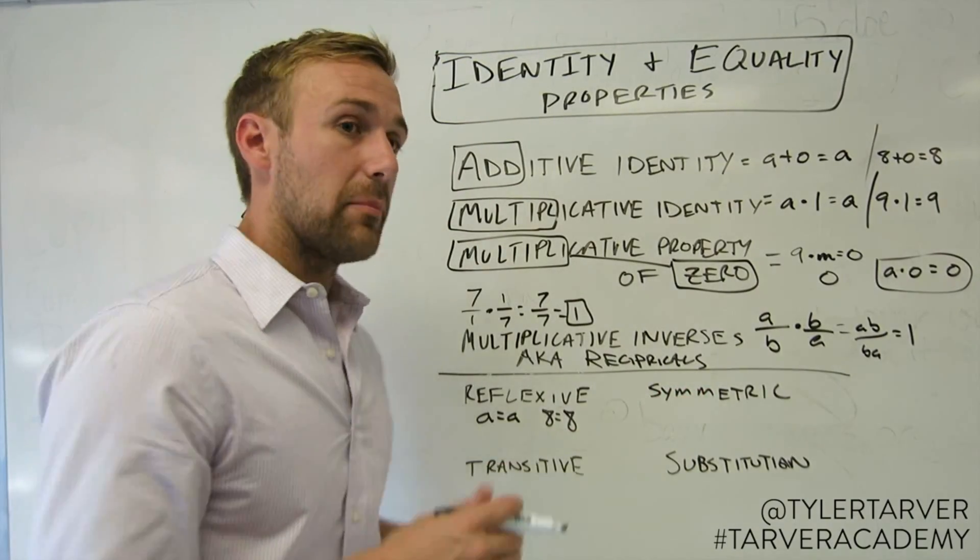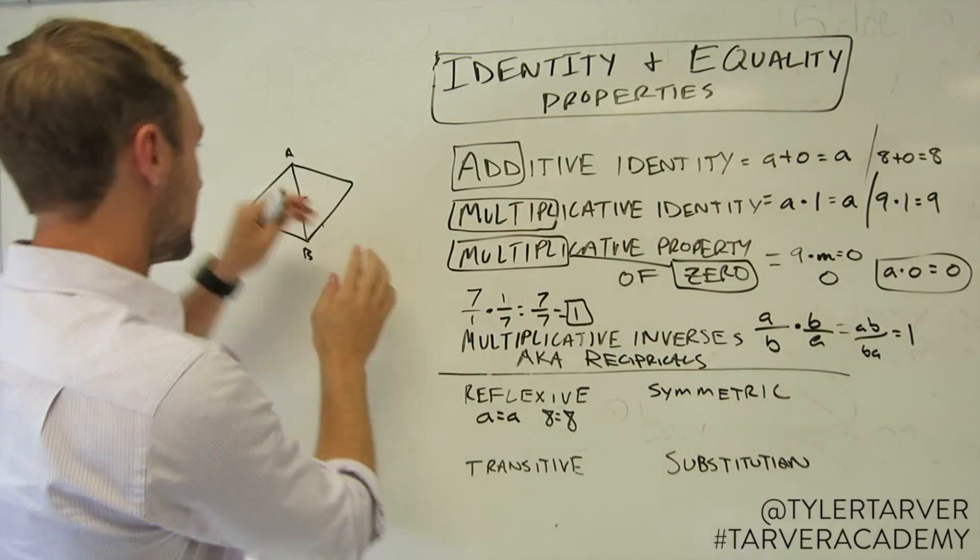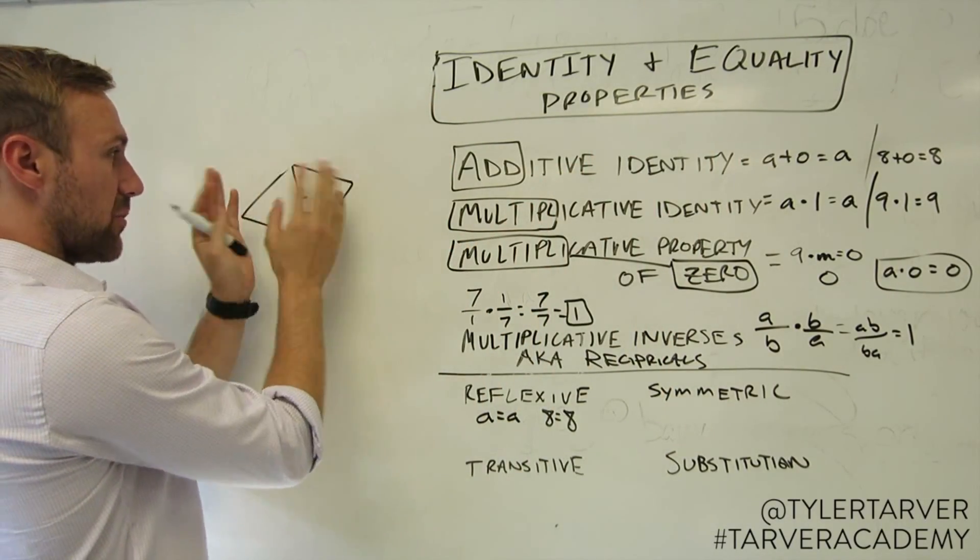All right, the symmetric property. Symmetry means that something looks the exact same on both sides. This triangle thing right here is symmetric, for the most part.